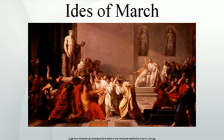On the anniversary of Caesar's death in 40 BC, after achieving a victory at the Siege of Perugia, Octavian executed three hundred senators and knights who had fought against him under Lucius Antonius, the brother of Marc Antony. The executions were one of a series of actions taken by Octavian to avenge Caesar's death. Suetonius and the historian Cassius Dio characterized the slaughter as like a religious sacrifice, noting that it occurred on the Ides of March at the new altar to the deified Julius Caesar.